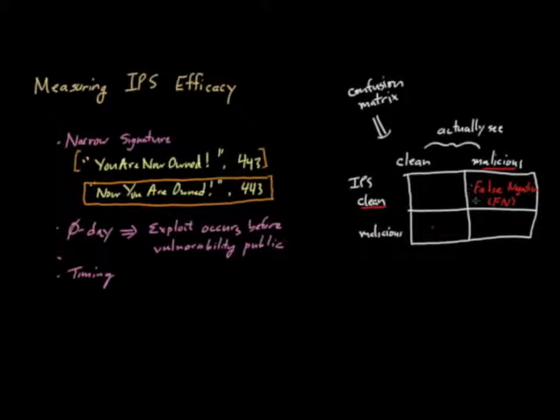Let me talk about the flip metric, which is called a false positive. A false positive is when the IPS will call something malicious when, in fact, that traffic flow was actually clean, so it's mislabeling something clean as malicious.